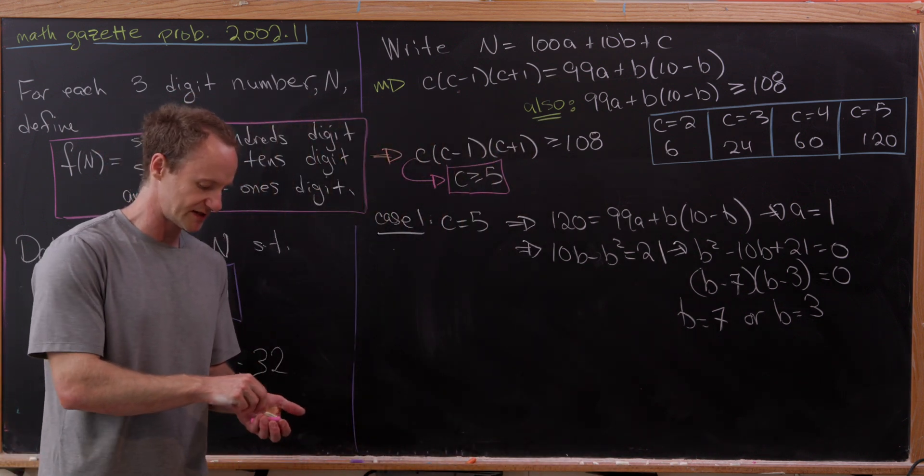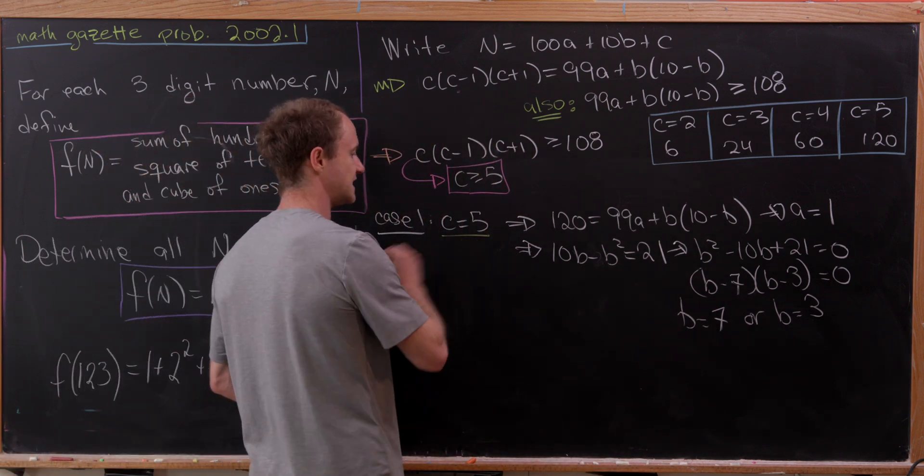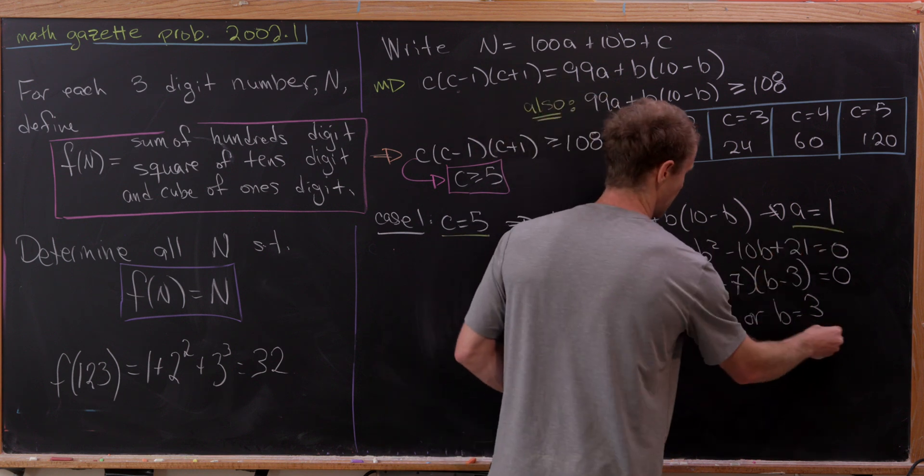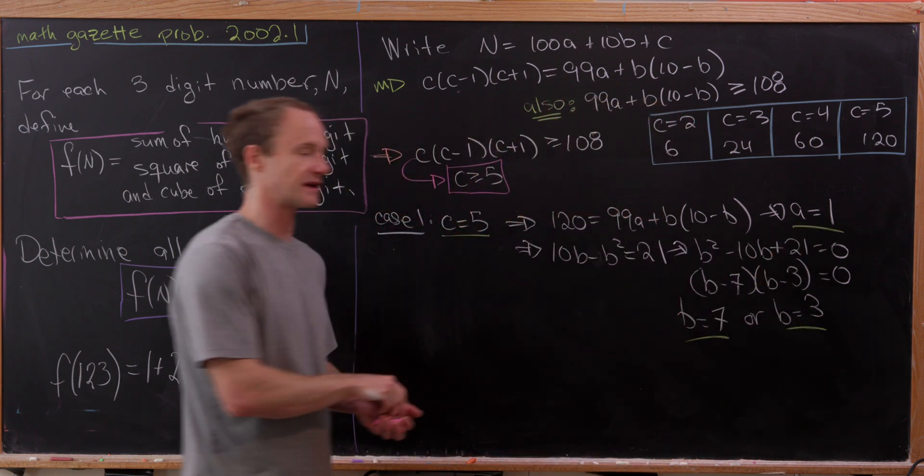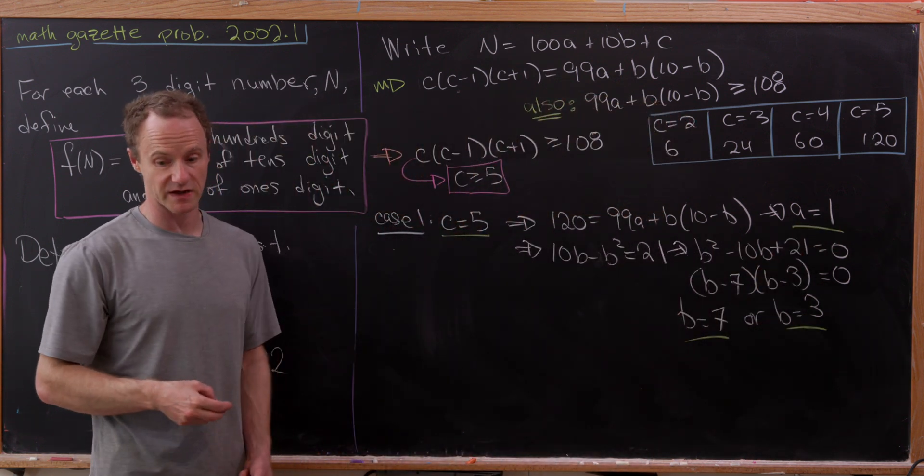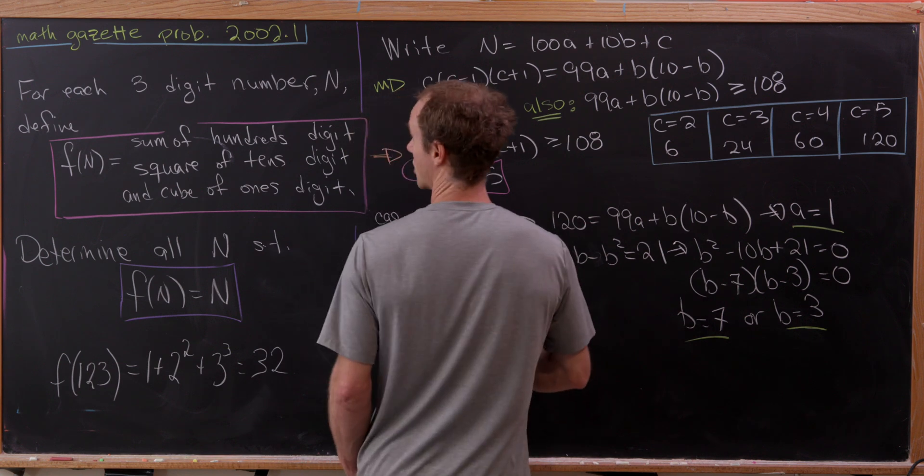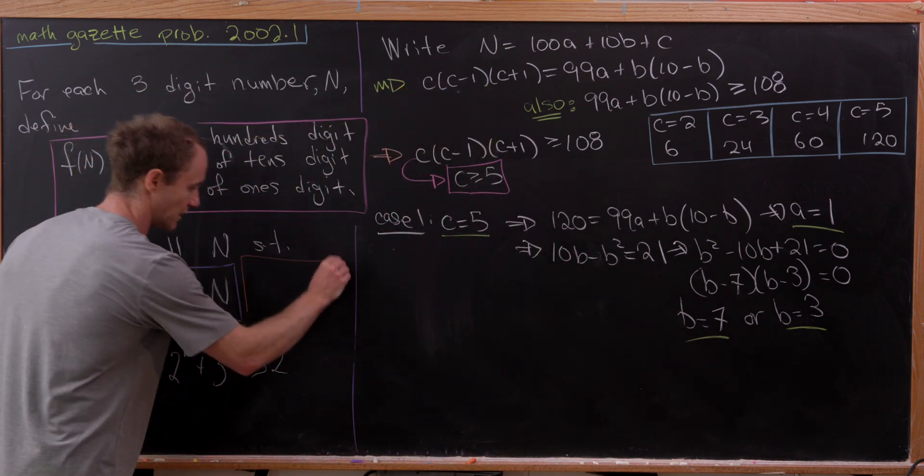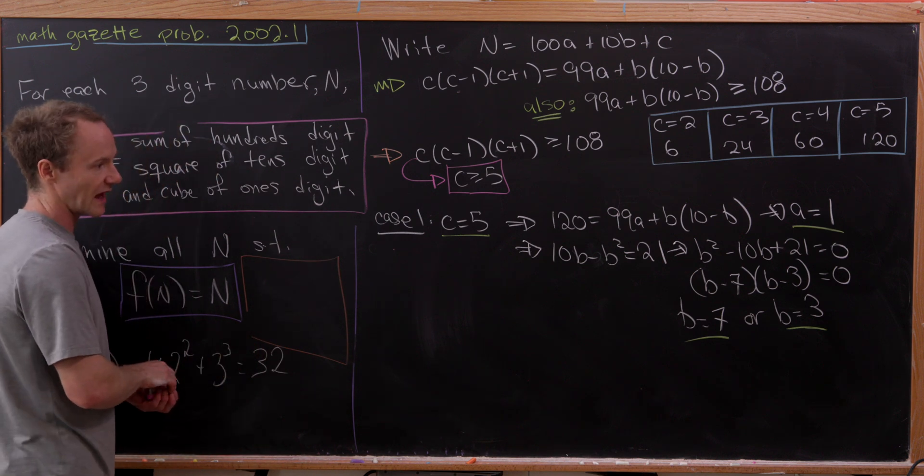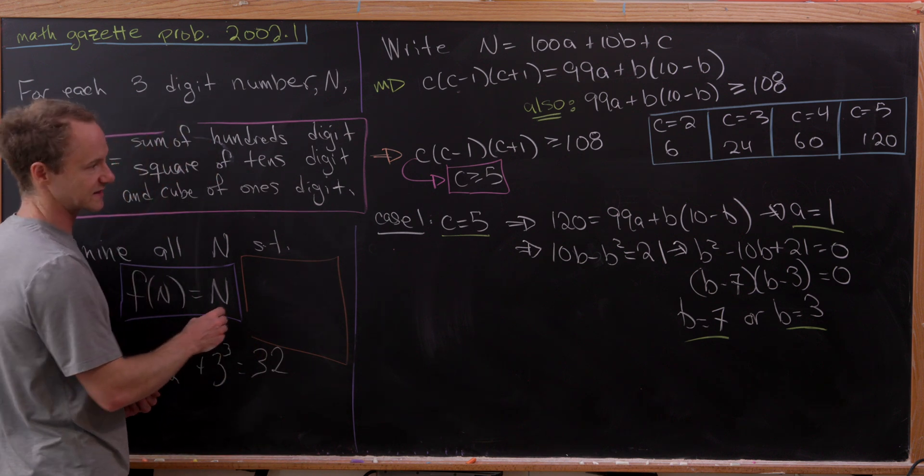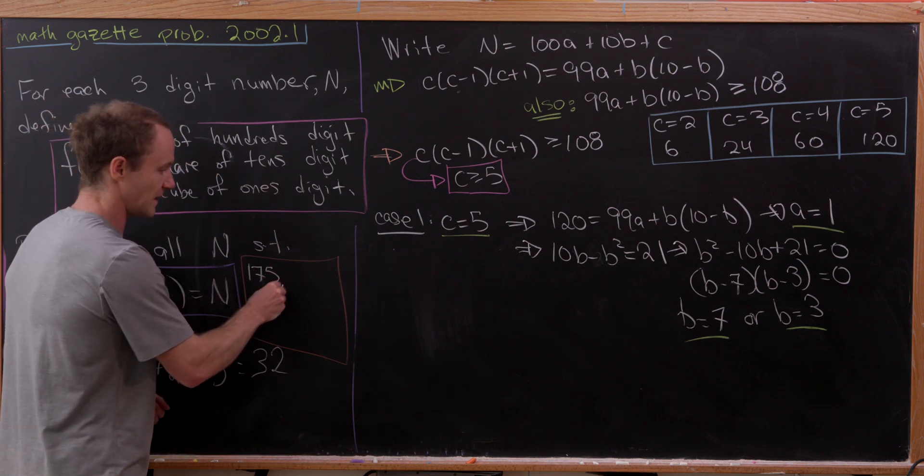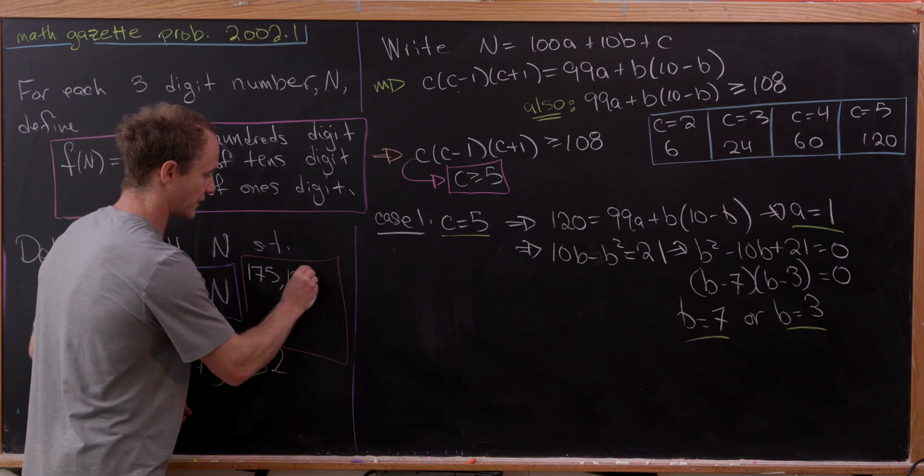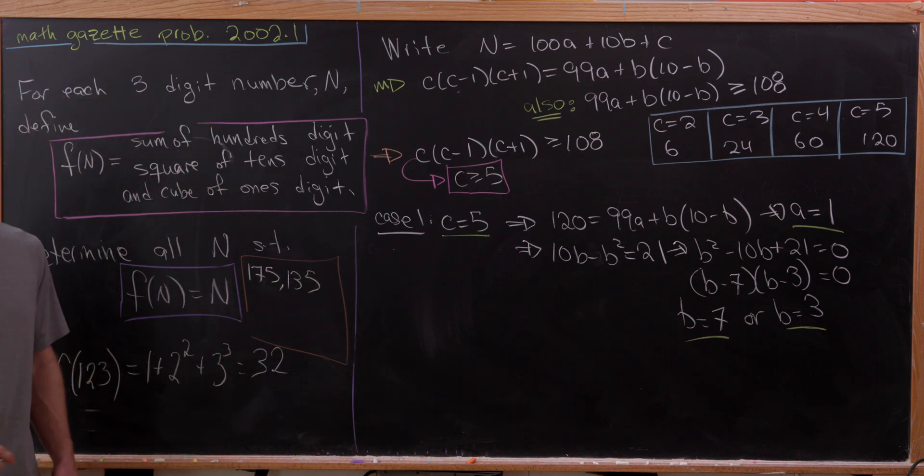But now let's see what we've got. We have c is 5, we have a is 1, and then we have these two possibilities here, both of them giving us solutions. So we've got some solutions over here. Maybe we'll insert them into a box. We have this number, 175, and this other number, 135. Those are going to satisfy our condition.